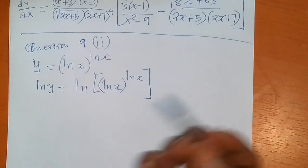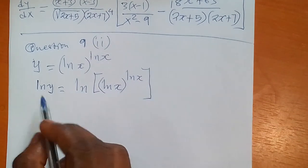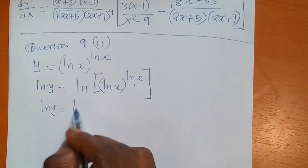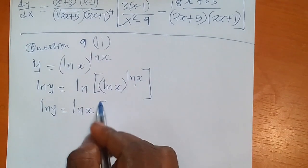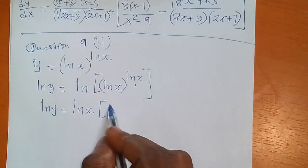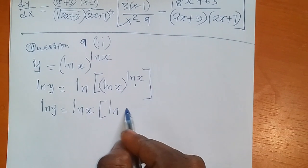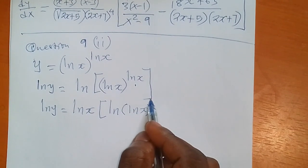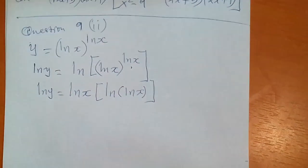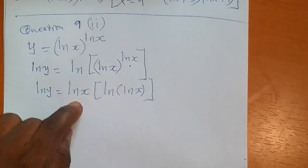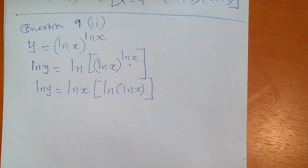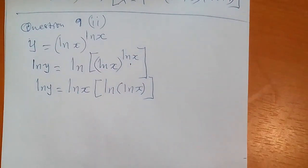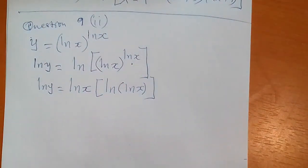Using the rules of logarithms shown earlier, I drop the power, so this becomes: ln(ln x) times ln x, like this. So we have this function times this function — the derivative of this side will use the product rule, plus chain rule here.